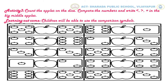Now you will count the apples from the first dice: 1, 2, 3, 4, 5 — there are 5 apples in the first dice. We will count apples from the next dice: 1, 2, 3, 4, 5 — here also 5 apples. In both dice the number of apples is the same, so here in the middle big apple we have to write the equal symbol.